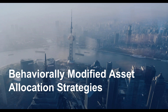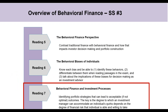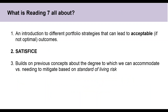What is reading seven? Again, it's the least important reading. It's also quite short. Basically, we're going to introduce a number of different portfolio strategies that can lead to acceptable if not optimal outcomes. This goes back to the idea that individual investors are imperfect and subject to various biases. Some of these biases can be very hard to mitigate, so behavioral finance offers portfolio strategies that lead to acceptable if not optimal outcomes. The end goal is to get as close to efficient — as defined by modern portfolio theory and traditional finance — as possible.